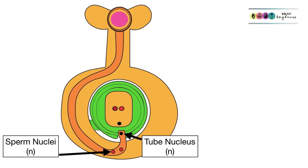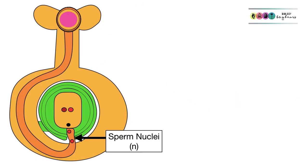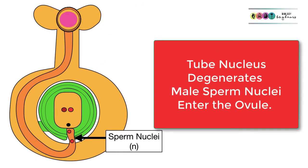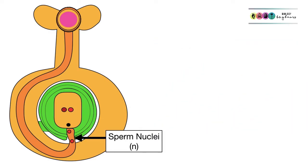The pollen tube grows down through the carpel towards the ovule, controlled by that tube nucleus. Inside the pollen tube are those male gametes, those sperm nuclei, and remember they're both haploid. Eventually the pollen tube will make its way to the micropyle, which is the entrance to the ovule. It's here that the tube nucleus degenerates so those sperm nuclei can enter the ovule.